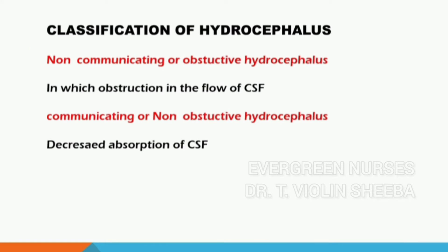There are different types of hydrocephalus. The first type is non-communicating hydrocephalus, otherwise called obstructive hydrocephalus. Here there is an obstruction in the flow of CSF, leading to problems with circulation and absorption. This type is common in children, where accumulated CSF distends the ventricles and compresses the brain structure. In the second type, the normal flow of CSF within the ventricle occurs normally, but there is decreased absorption of CSF in the arachnoid granulations, leading to accumulation of CSF and compression of the brain structure.